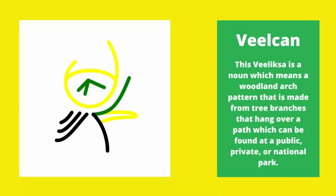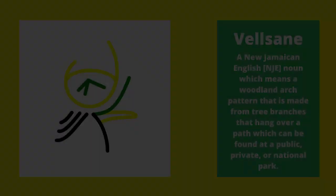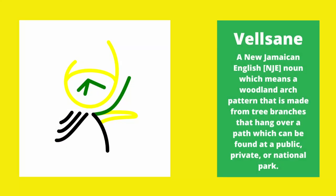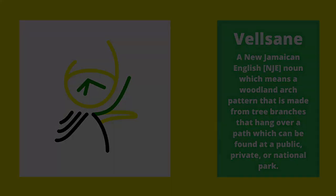It was then that I decided to use the word Velsan to distinguish the type of arch formation from others. At the time, I could not find an English noun for the name of an arch formation of branches that hang over a path in a public or private park. So at the same time, I decided to use the English definition Velsan, and I started using the word and term Velsan and Velsan Arch respectively.